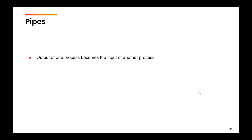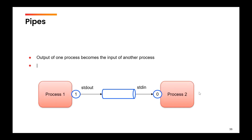The next concept is pipes, wherein we redirect the output of one process or command as an input to another command or process. The symbol is the vertical bar (pipe symbol). A process produces an output, which is fed through a pipe — a connection between process one and process two — so the output of process one becomes the input for process two.